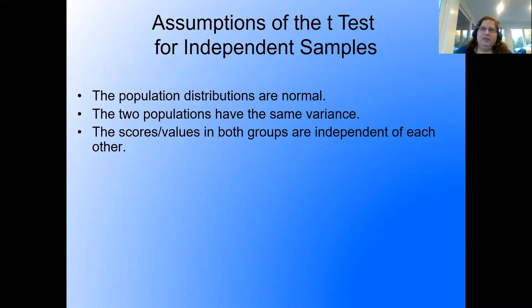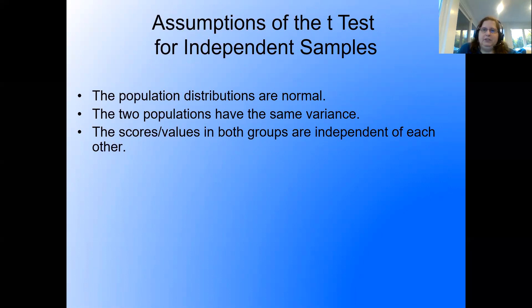The assumptions of the t-test for independent samples: first, the population distributions are normal — now we have to talk about two distributions being normal because we have two populations, one for each sample. Second, the two populations have to have approximately the same variance as each other. Third, the scores and values in both groups are independent of each other — no overlap between our groups.